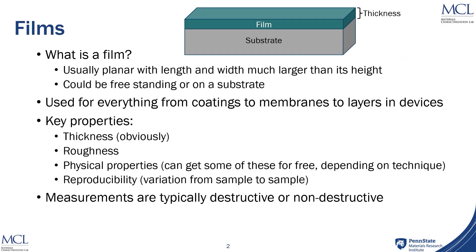So what is a film? It's usually a planar device whose length and width is much larger than its height. It could be freestanding, could be on a substrate, could be anything from coatings to membranes to layers in a semiconducting device. Key properties that people want to know about films typically are thickness, roughness, and physical properties. Some of these you can get for free depending on the techniques you use to measure the thickness — these might include optical constants, conductivity, and various things like that. And then, of course, reproducibility: if I measure samples, how much variation is there from sample to sample in my devices?